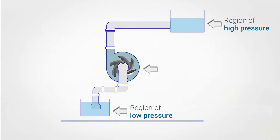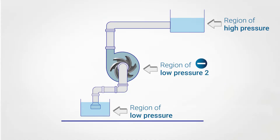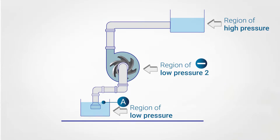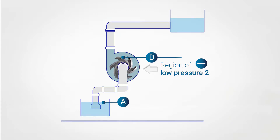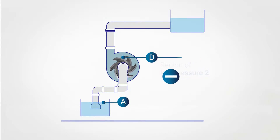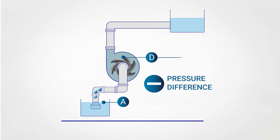Initially, a portion of water is already present inside the pump. When the impeller starts rotating, the water is cut off by its blades, creating a region of low pressure. The pressure inside the pump becomes much lower than the pressure inside the lower reservoir, creating a significant pressure difference between point A and point D.